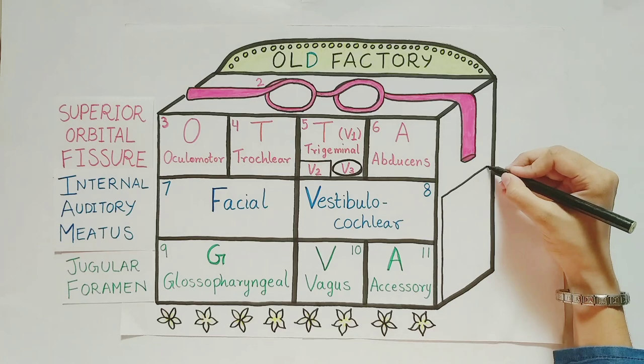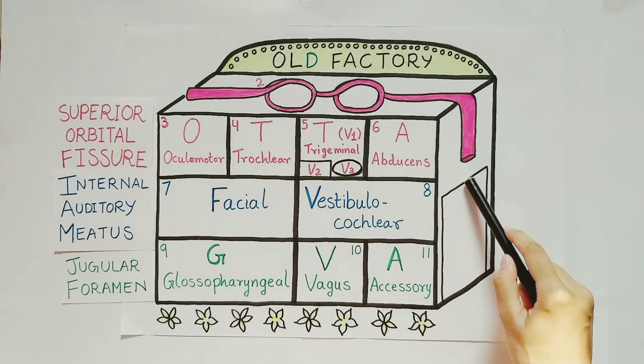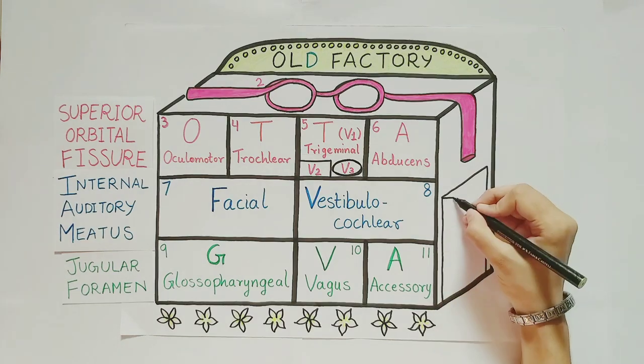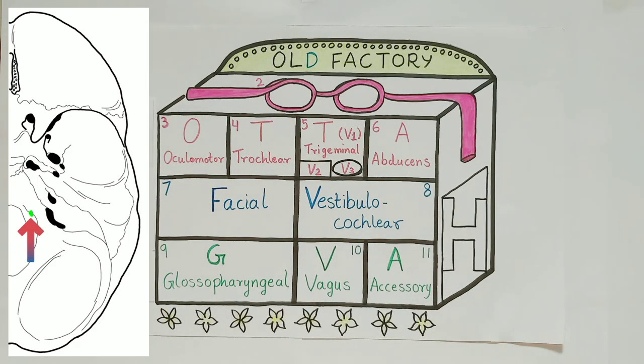this factory needs a gate, which I'll draw on the side. Remember this canal extending down? Right. I'll draw an H here for hypoglossal nerve, which passes through the hypoglossal canal.